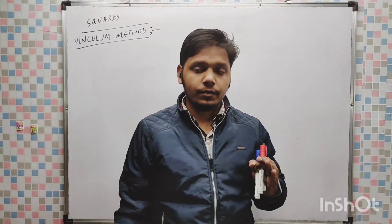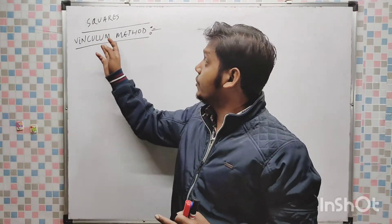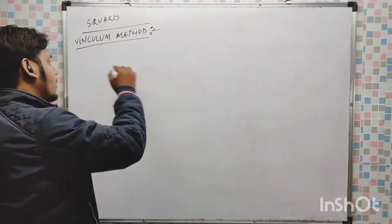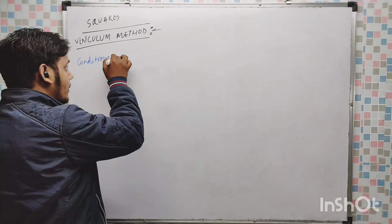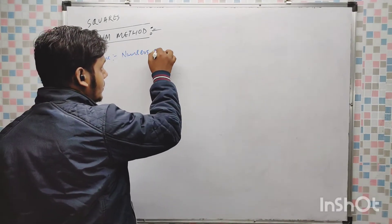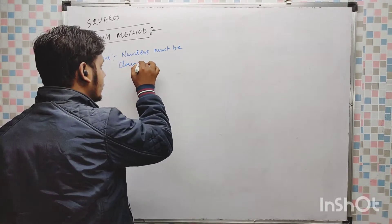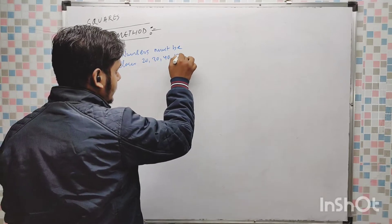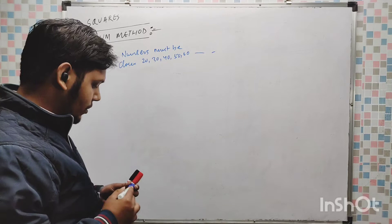Hello students, in this video this is also by using vinculum method and here we are going to find the squares of numbers. For the condition, we have to follow that the numbers must be closer to 20, 30, 40, 50, 60 like that, so that it will be easy for you to understand.